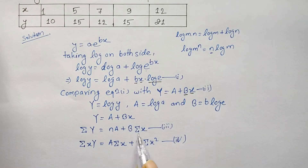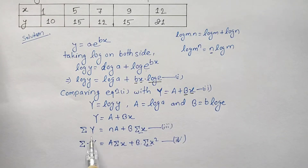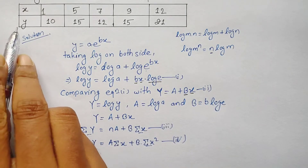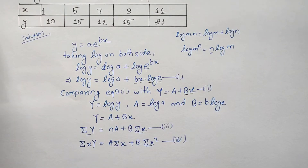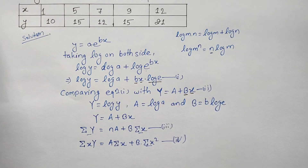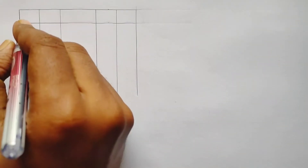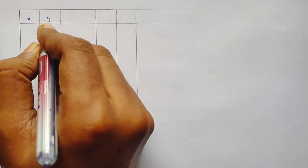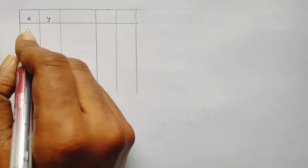We need to find summation x, summation x squared, and summation capital Y. Note that capital Y is what we need — in the question we are given small y, so we must convert. In the next step we will draw a table to calculate capital Y, x squared, and summation xY.